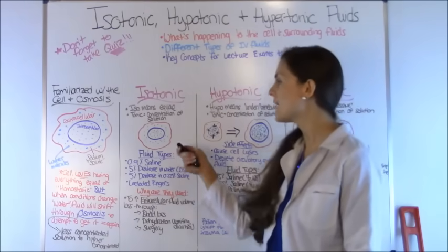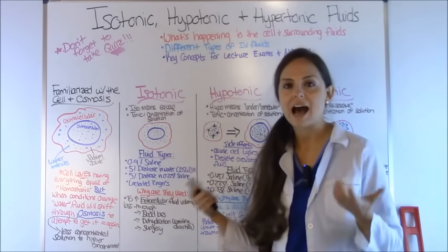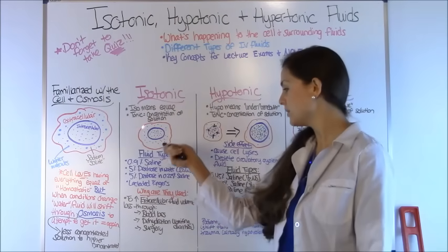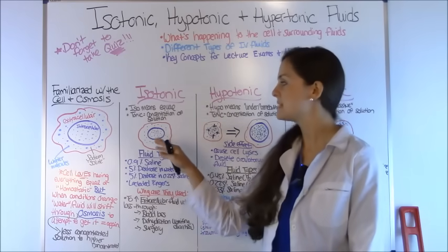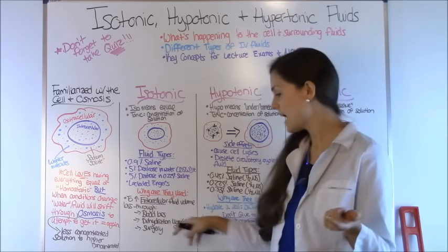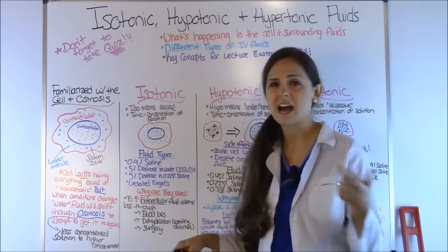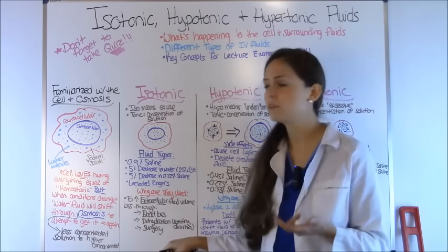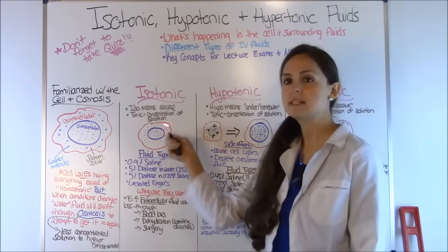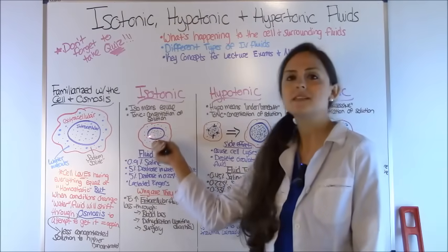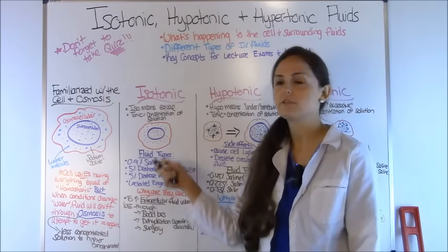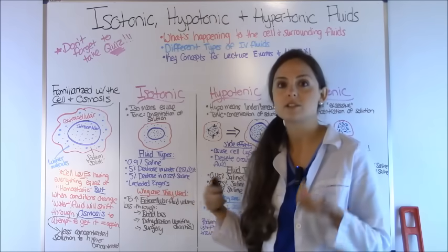Why would a patient be ordered an isotonic fluid? They are ordered to increase extracellular fluid volume because the patient has lost that fluid through blood loss, dehydration, vomiting, diarrhea, or surgery. Isotonic solutions won't cause a shift — they won't make the cell shrink or swell. We simply want to replace the extracellular fluid, and that's how isotonic solutions allow us to do that.